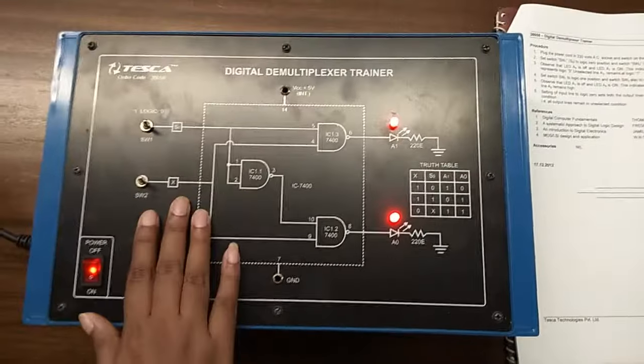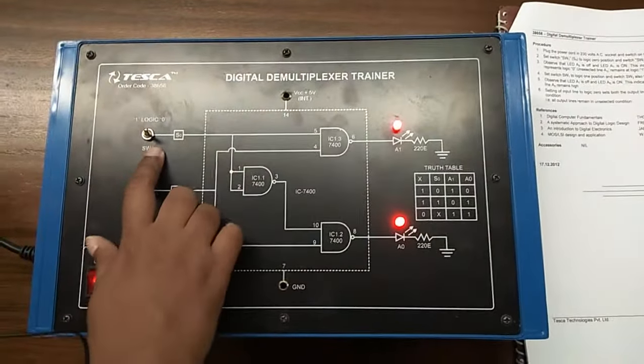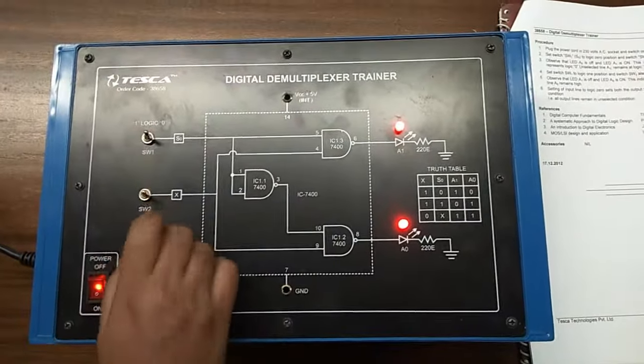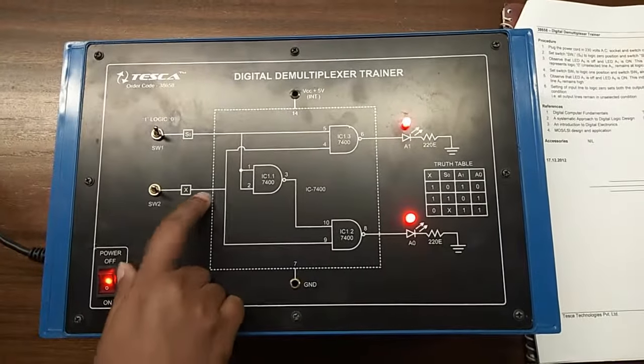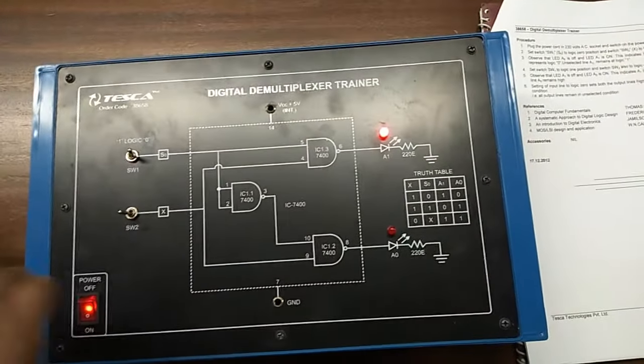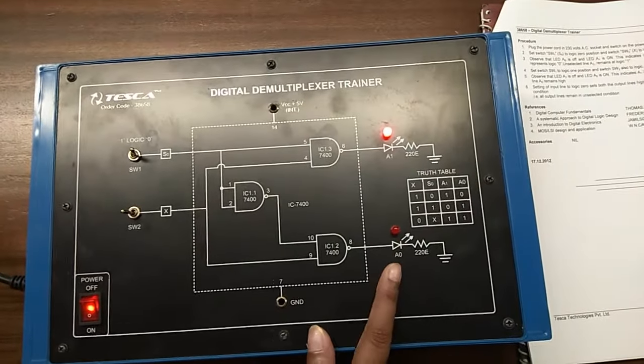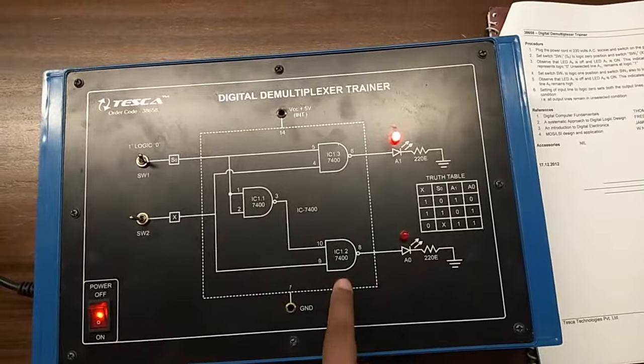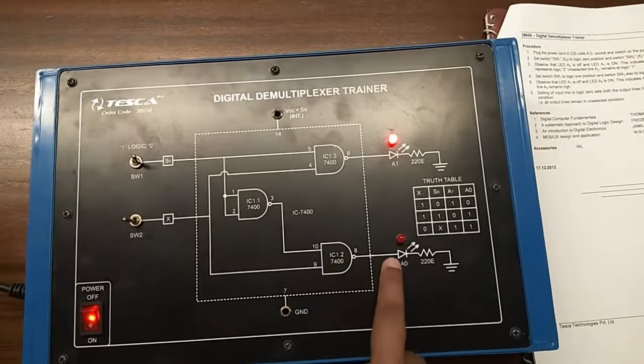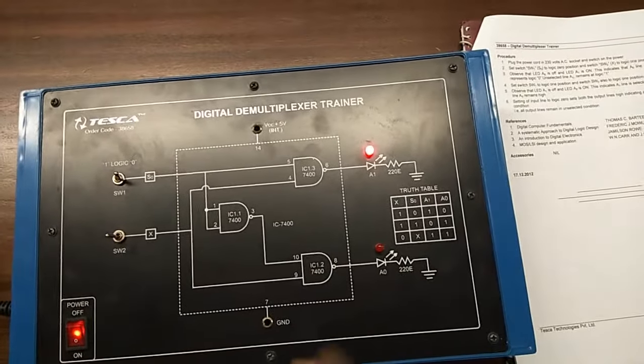Turn on the switch. First, set switch 1 to logic 0 position and switch 2 to logic 1 position. We can see that LED A1 is on and LED A0 is off. This indicates that the A0 line is selected and represents logic 0.